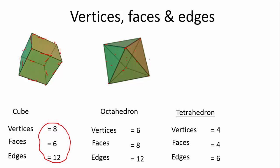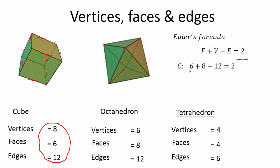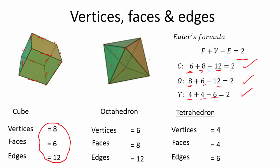The tetrahedron had four, four, and six. There's an interesting formula called Euler's Formula, which says: faces plus vertices minus edges equals two, for many 3D shapes — not all, but many. Let's check with the cube: six faces plus eight vertices minus twelve edges equals fourteen minus twelve, which equals two. That works! For the octahedron: eight faces plus six vertices minus twelve edges — fourteen minus twelve equals two. And the tetrahedron: four faces plus four vertices minus six edges equals two.